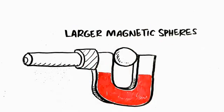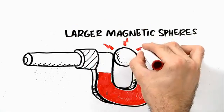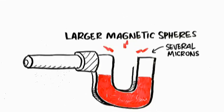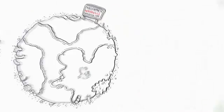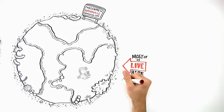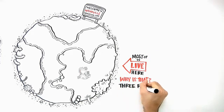So let's compare this to the micro-sized planet, where larger magnetic spheres, or beads, are used. Beads that are several microns in size, completely spherical, and highly uniform. Now, most of us live on the nano-sized planet of cell isolation. Why is that?